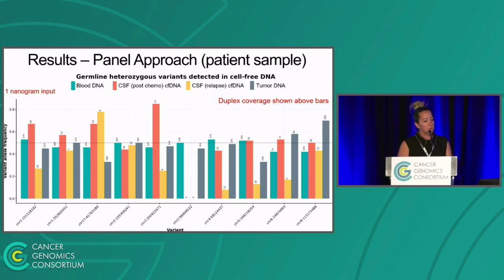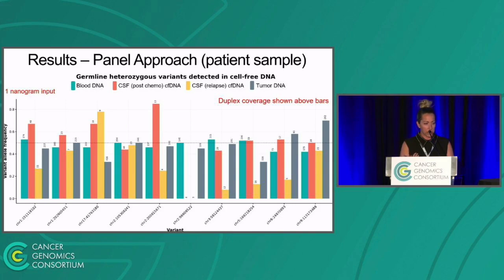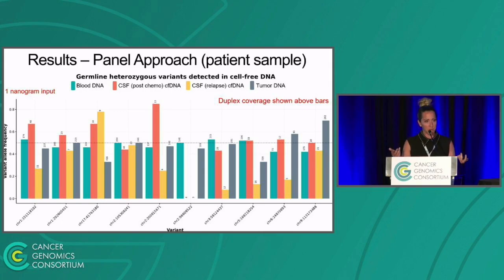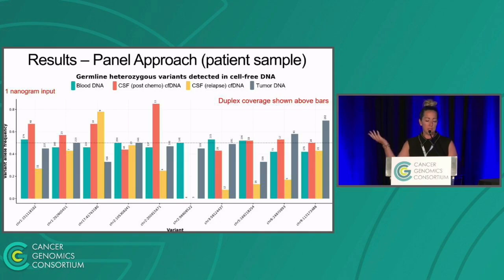The next slide shows data from a real patient sample. We designed a panel based on their exome data. We have four samples: genomic DNA from blood and tumor, and cell-free DNA from two different CSF time points. Here we show the germline variants—we routinely include rare heterozygous germline variants on patient panels as an inherent control, since we're getting such low yield of DNA and want to confirm it's from the patient and not contamination. We made these libraries from one nanogram input and detected the germline heterozygous variants in all samples, with the exception of a few due to low coverage.